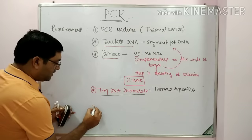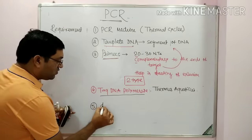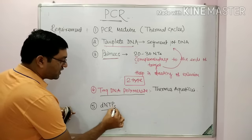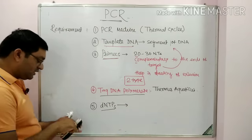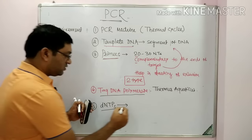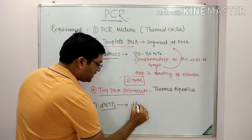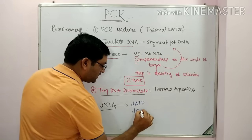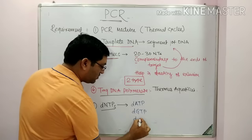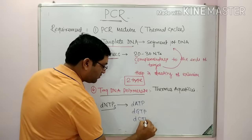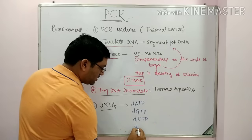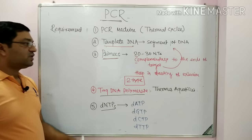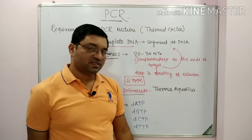The fifth requirement is deoxynucleotide triphosphates, or dNTPs. Four types of dNTPs are required: deoxyadenosine triphosphate, deoxyguanosine triphosphate, deoxycytidine triphosphate, and deoxythymidine triphosphate. These nucleotides are required for the PCR.